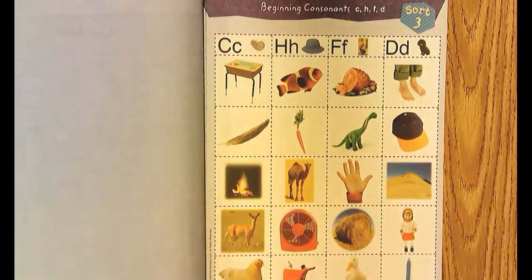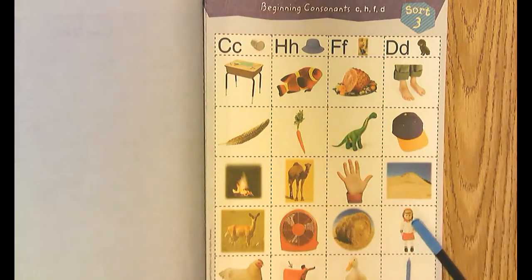I'm going to read the words in a random order. We'll cut them and separate them into four columns.